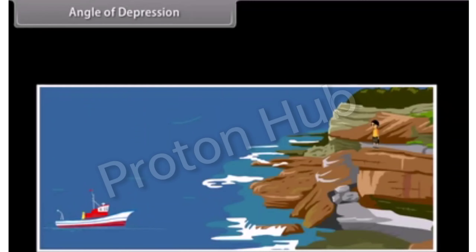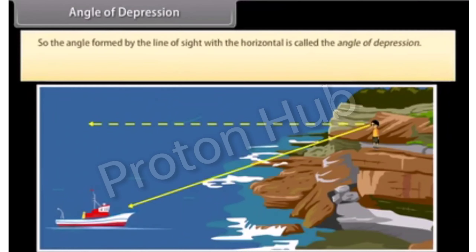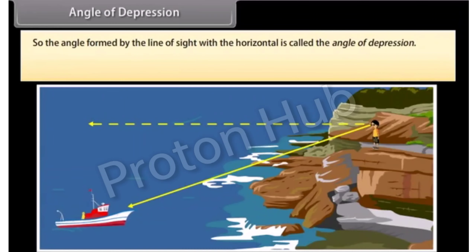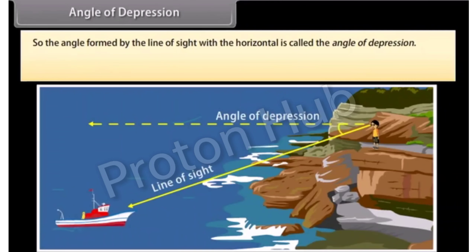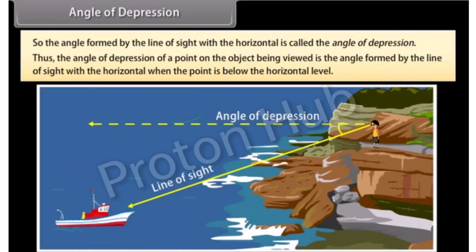Now consider the situation when a boy is standing at the cliff and is looking down at the boat. Here the line of sight is below the horizontal level. So the angle formed by the line of sight with the horizontal is called the angle of depression. Thus, the angle of depression of a point on the object being viewed is the angle formed by the line of sight with the horizontal when the point is below the horizontal level.